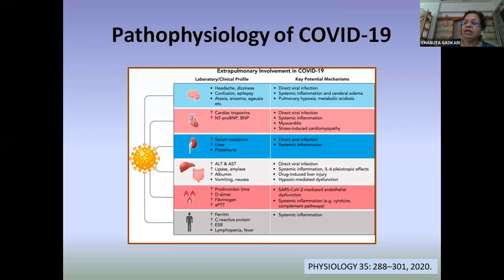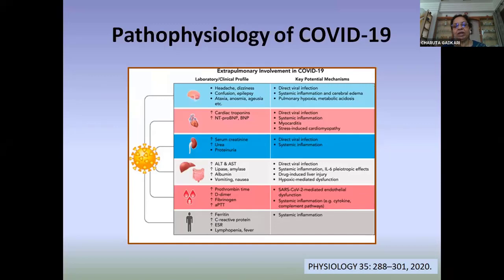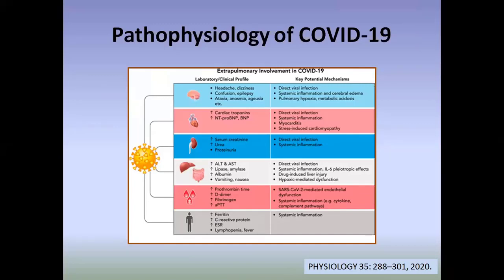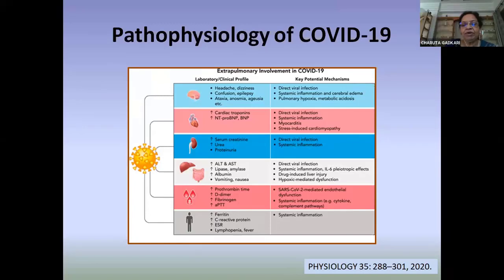The liver can be affected, causing nausea, vomiting, and elevated enzymes. In the blood, there will be increases in D-dimers, fibrinogen, and prolonged prothrombin time and APTT. Inflammatory markers will be elevated with raised ferritin, C-reactive protein, and ESR, and patients will present with lymphopenia and fever.